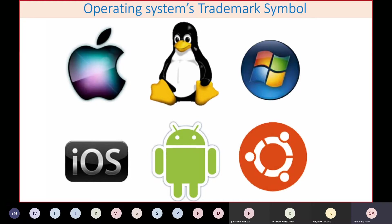You can see some pictures here — these are the trademark symbols of different operating systems. The first is Apple's Macintosh, then Linux, then Windows, then iOS used for Apple mobiles, then Android for mobile, and Ubuntu.